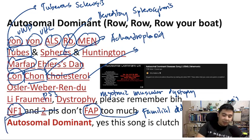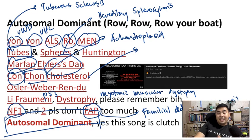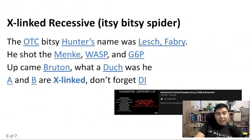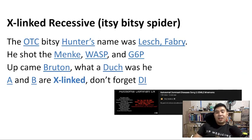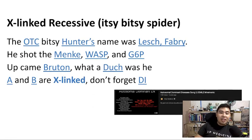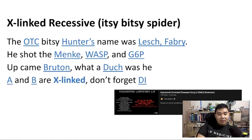The last part of the song is just to help you remember that these are autosomal dominant diseases. Next are the X-linked recessive diseases, to the tune of the Itsy Bitsy Spider: "The Otsy Bitsy Hunter's name was Lesh Fabry. He shot the manky wasp in G6P. Up came Bruton — what a douche was he. A and B are X-linked, don't forget the eye."